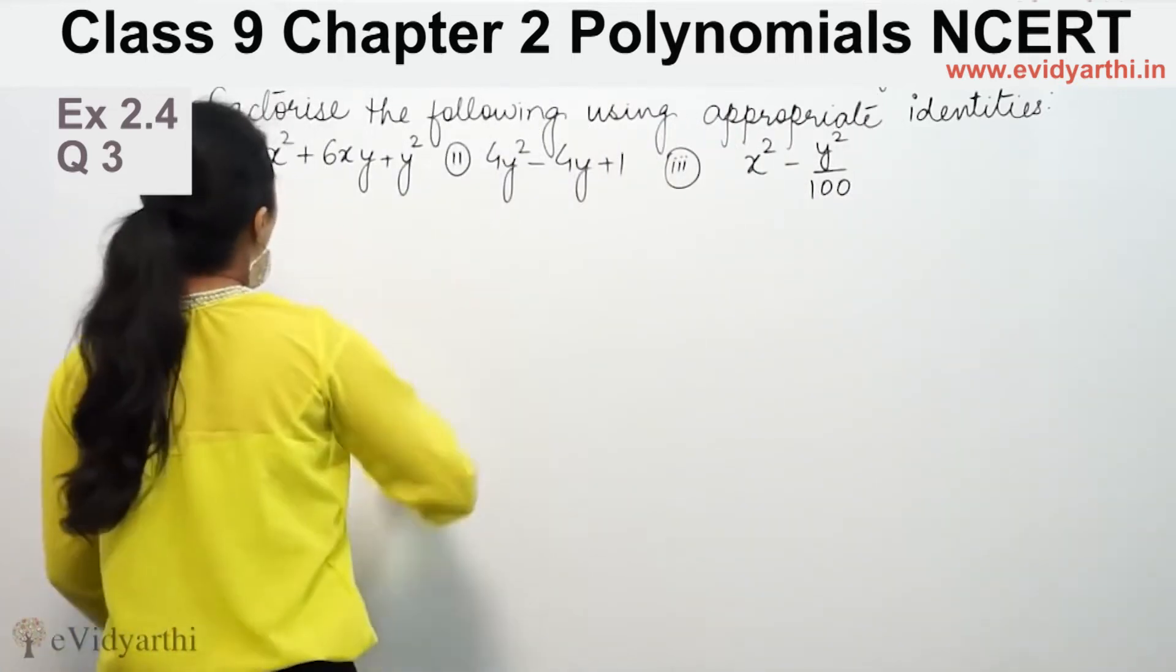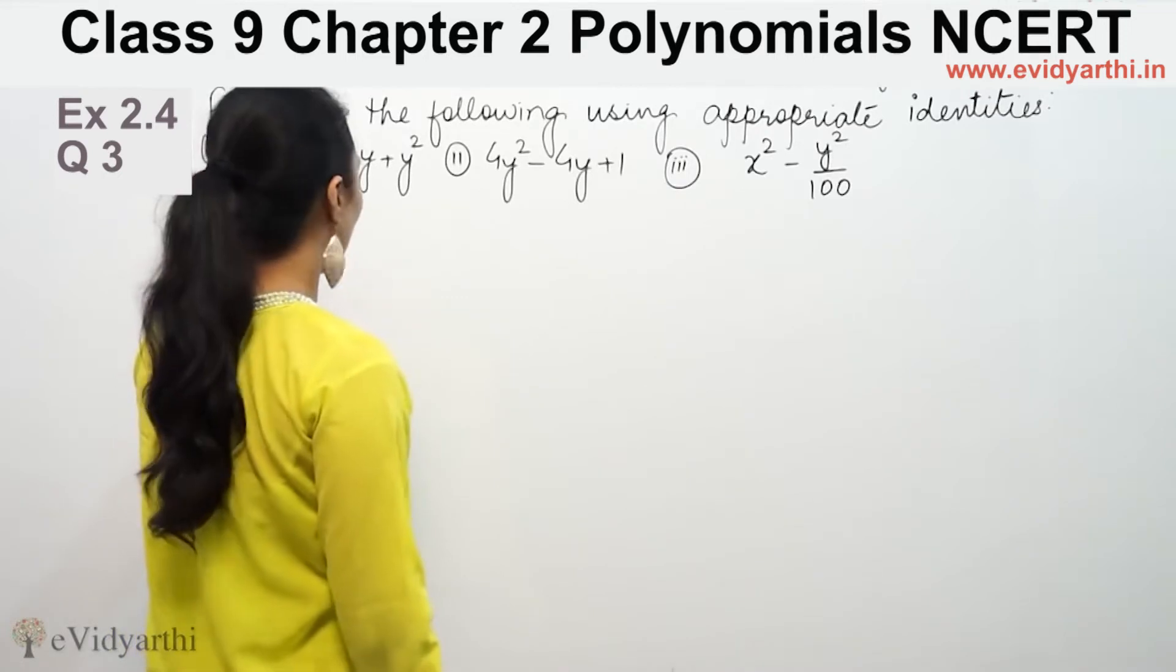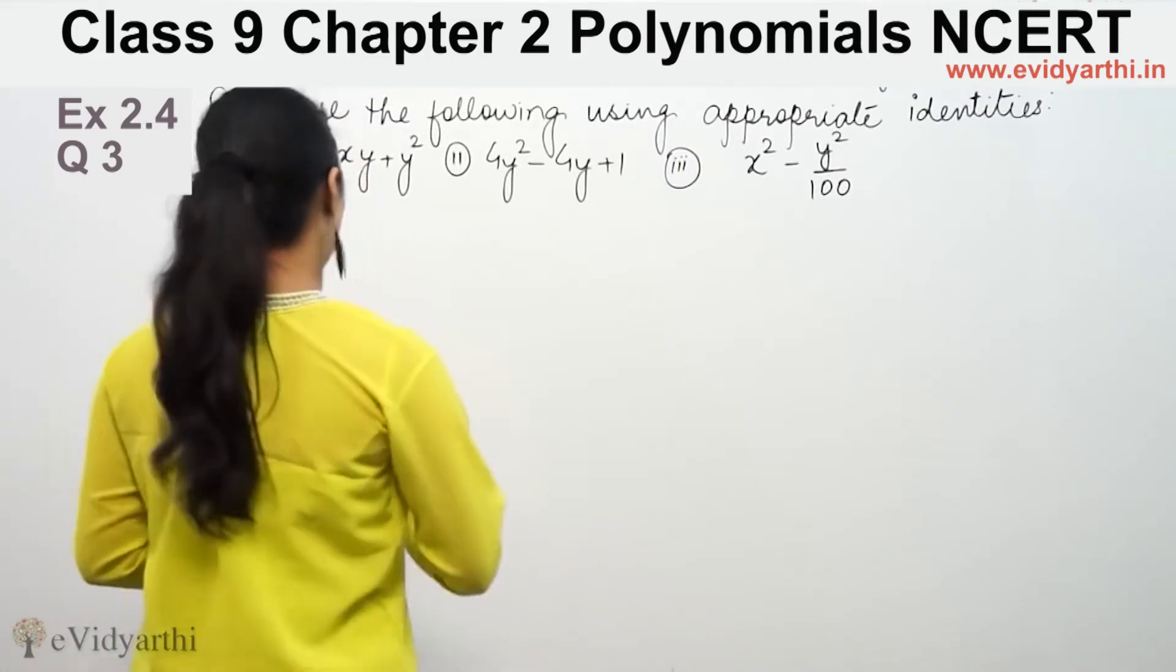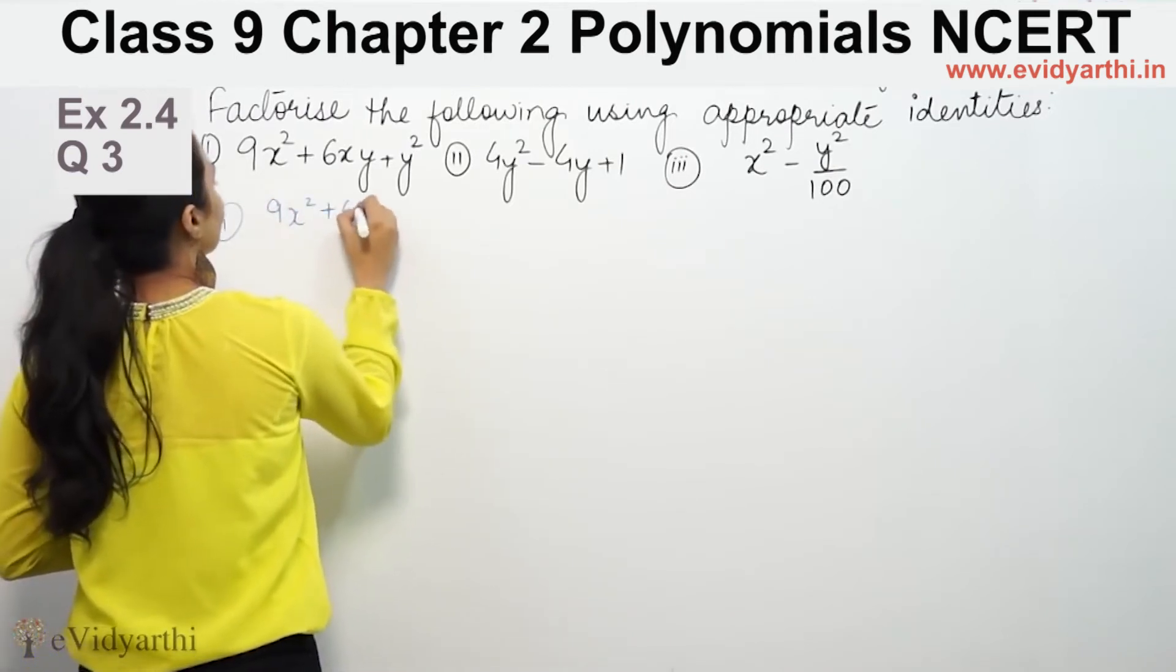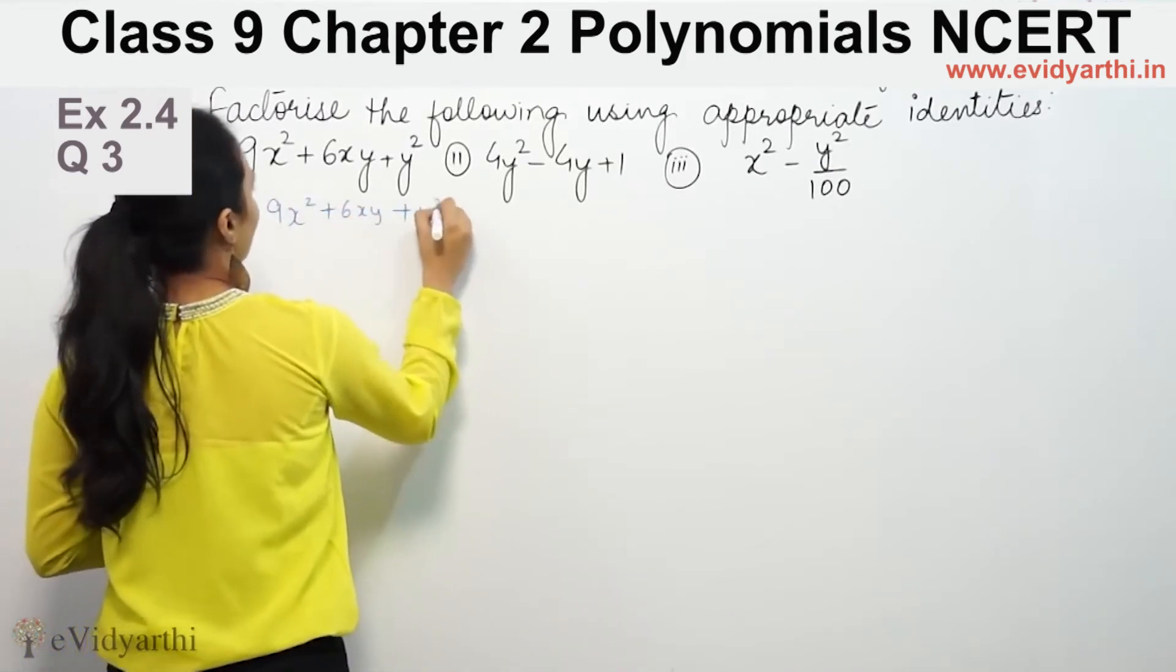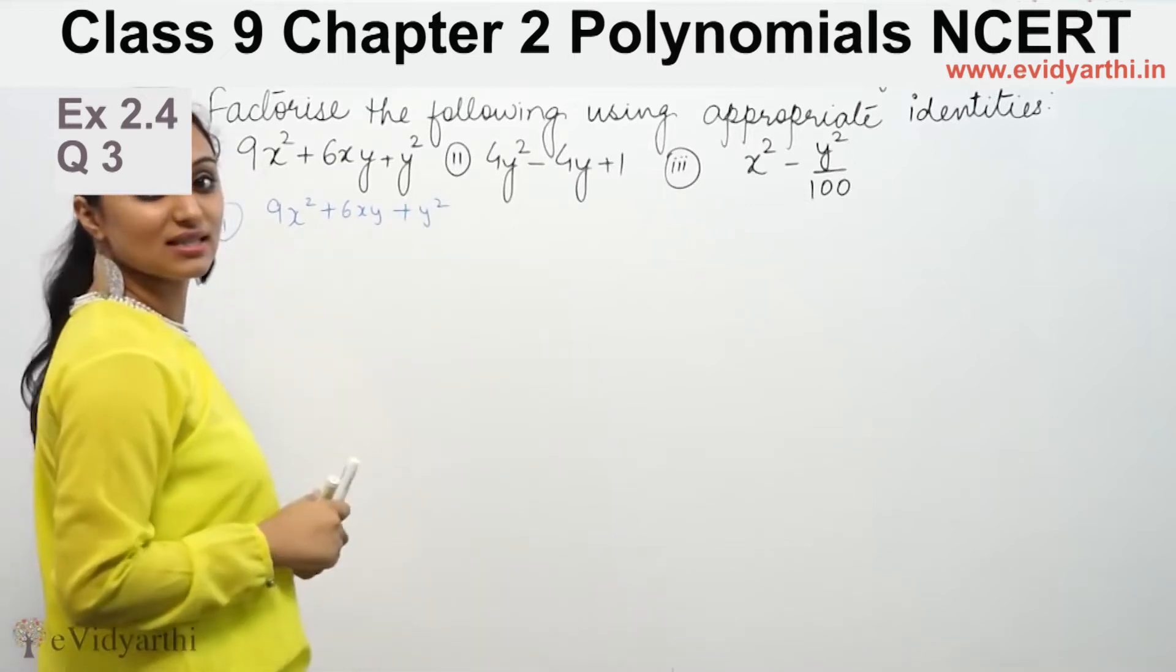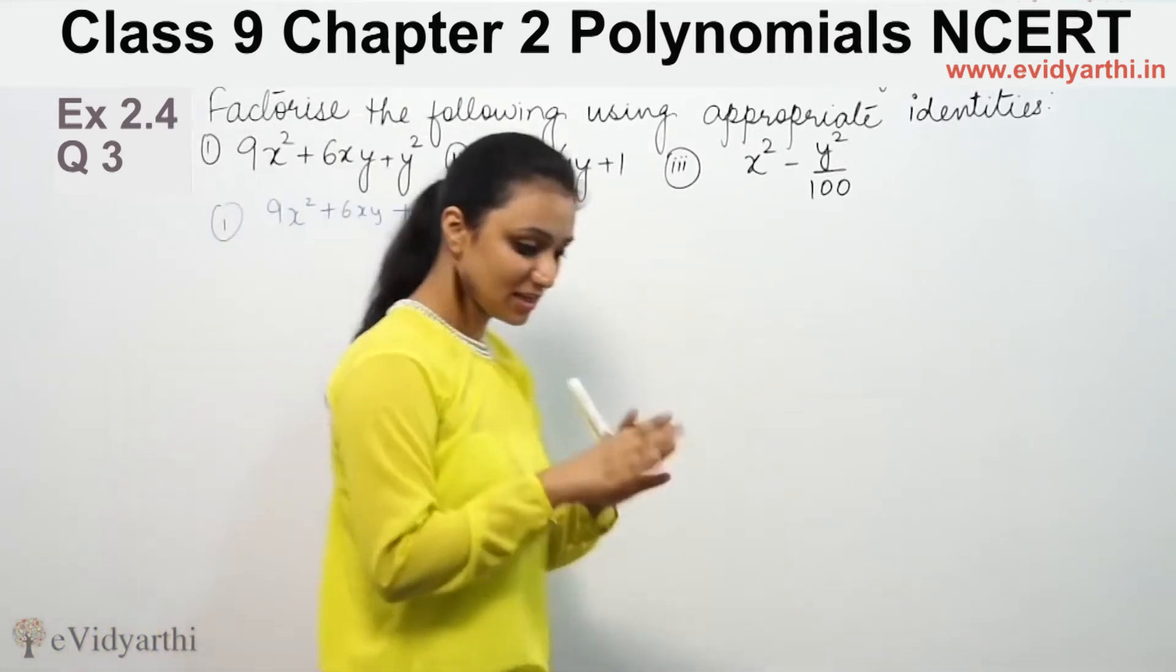Let's factorize it. First is 9x² plus 6xy plus y². So 9x² plus 6xy plus y². When we factorize it, we need to separate them into factors.